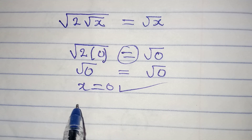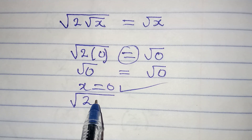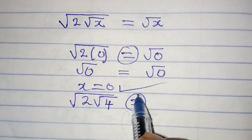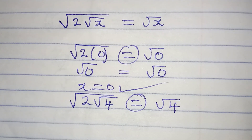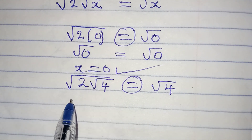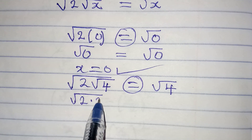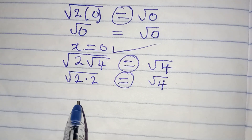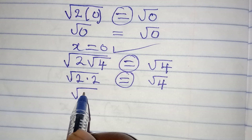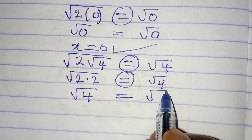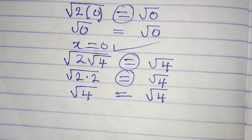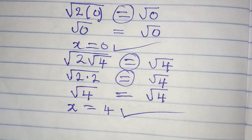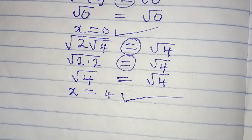Now for x equals 4: square root of 2 times square root of 4 equals square root of 4. Square root of 4 is 2, so the left side is 2 times 2. Multiplying inside gives square root of 4, and the right side is also square root of 4. This confirms x equals 4 also satisfies the equation. Thank you for watching.